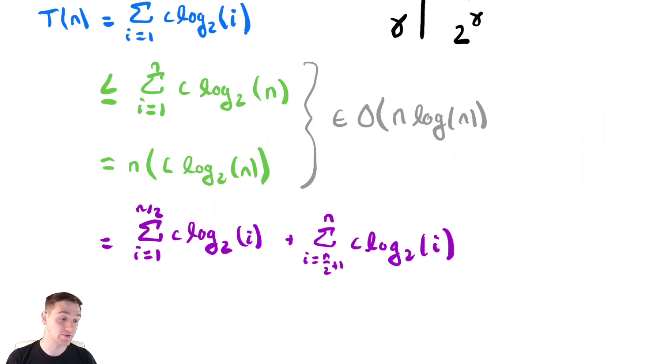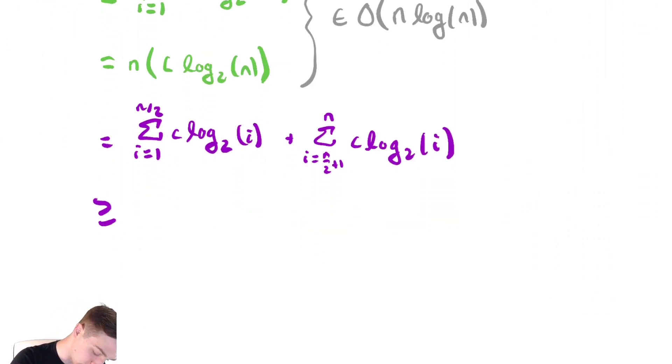We then ditch the smaller of those two summations. Log is an increasing function. So, the second of the two summations, this summation over here, is the larger of the two. So, we're going to get rid of the first summation.